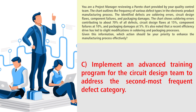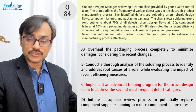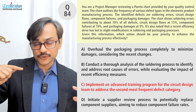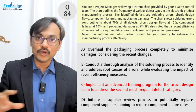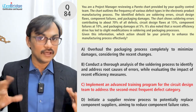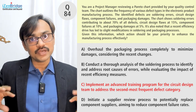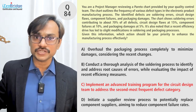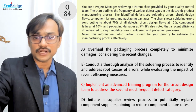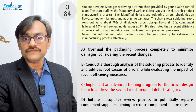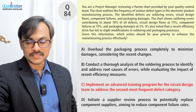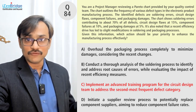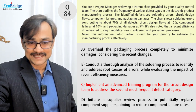Option C says: implement an advanced training program for the circuit design team to address the second most frequent defect category. The question may create some confusion because it hints that you've already worked on soldering and there was improvement. Some people may think: since soldering has been improved, why not move to the second category? But even after improving, soldering still contributes 70 percent — so I still need to focus there, not on circuit design at 15 percent.